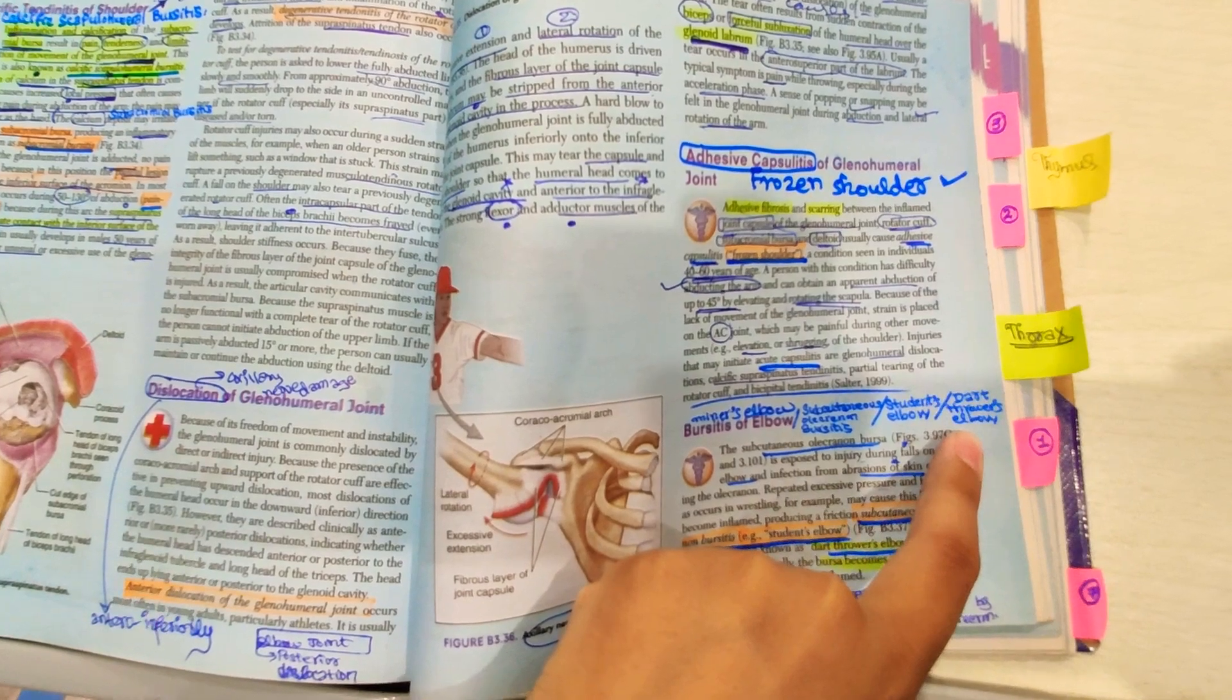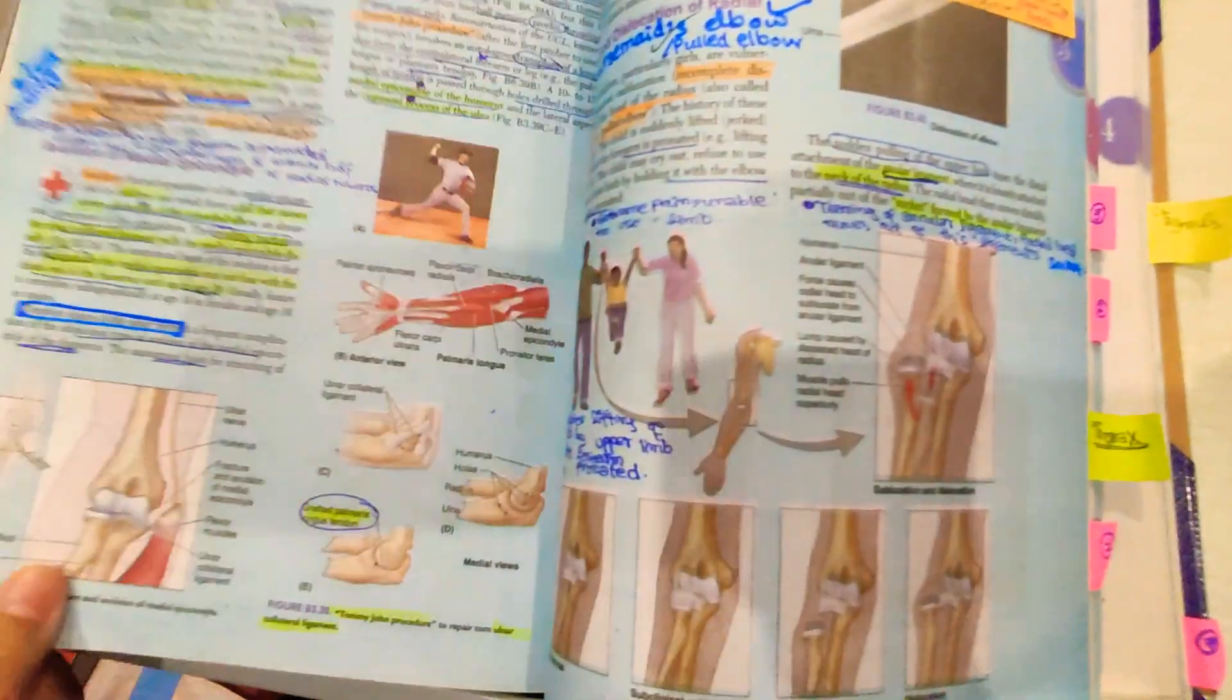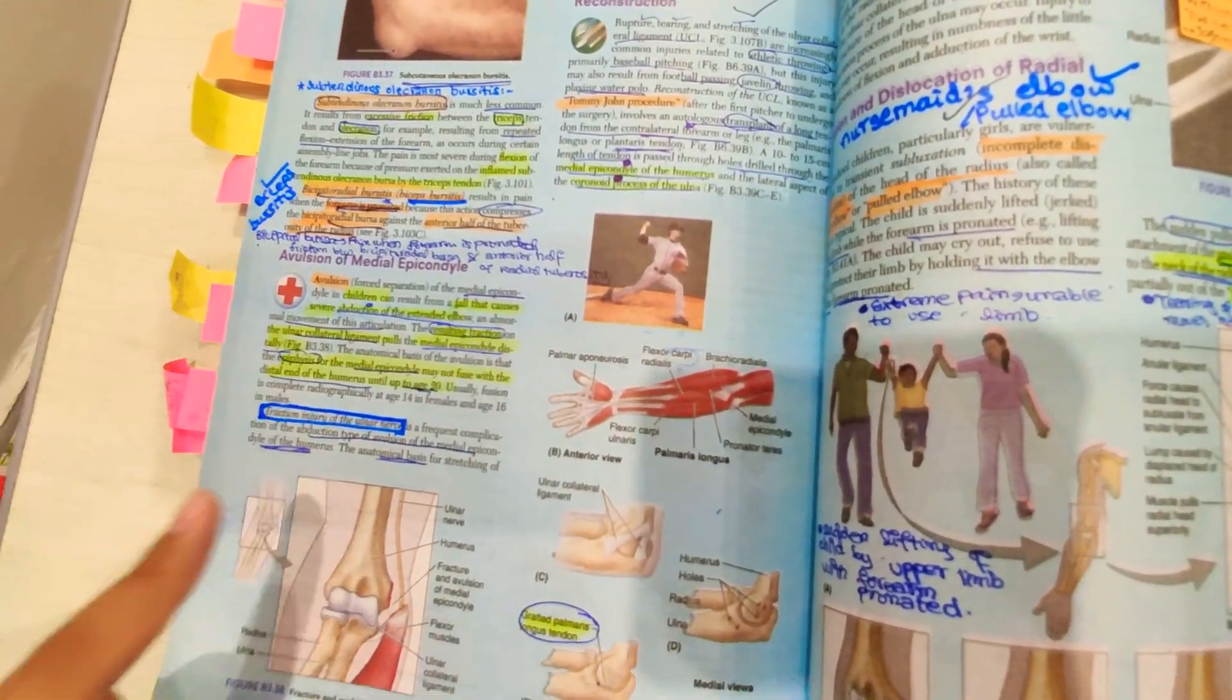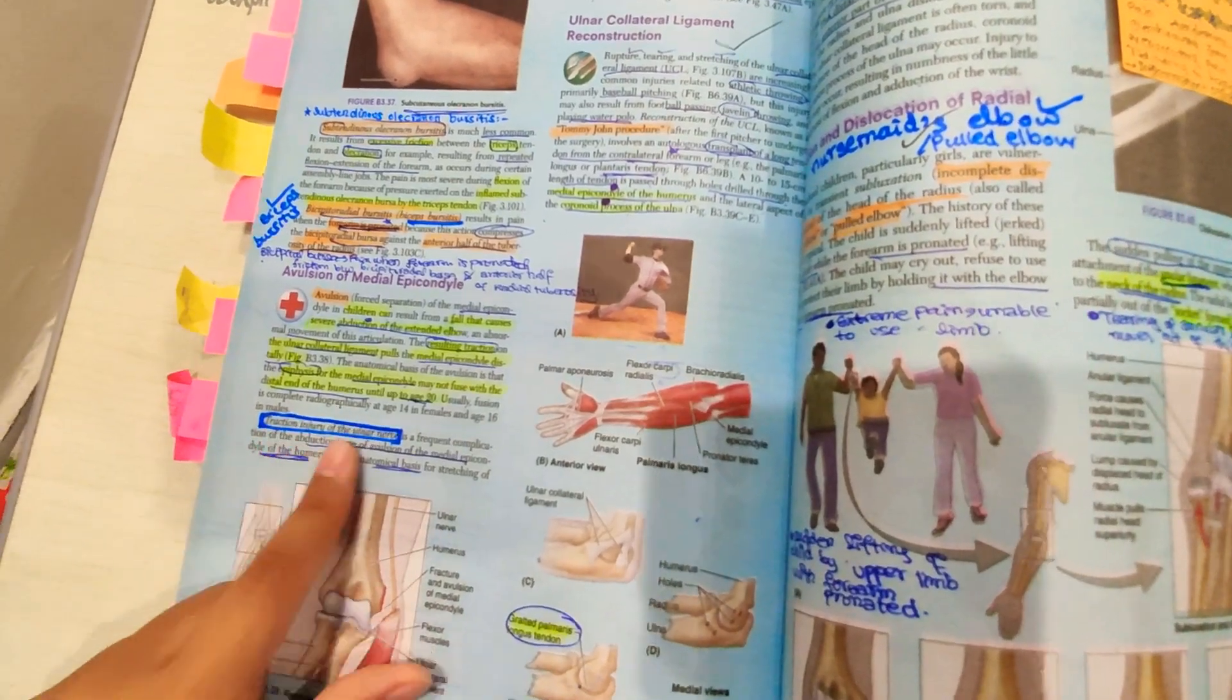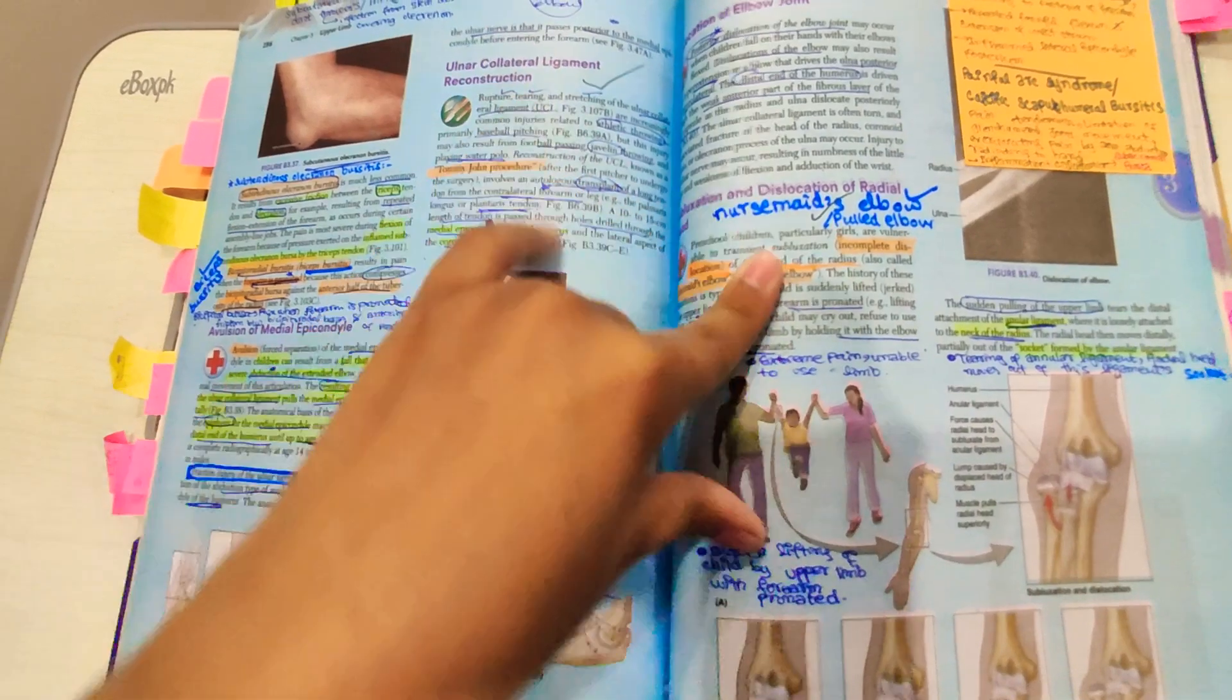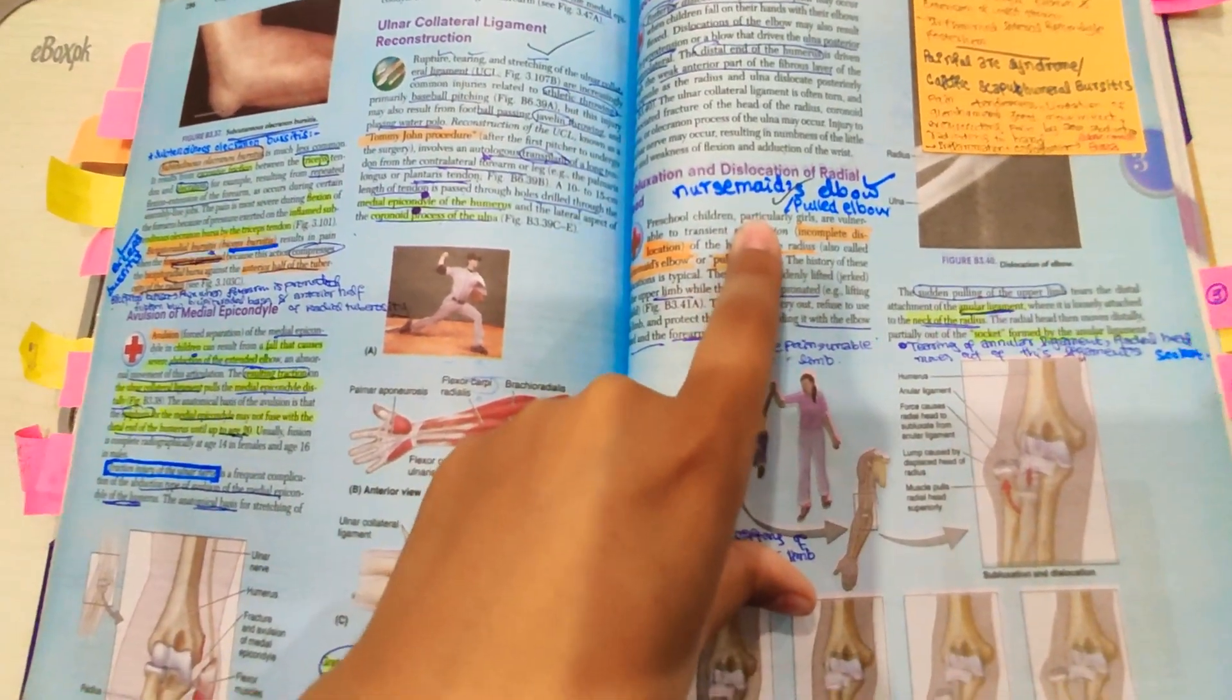Student's elbow, dart thrower's elbow, miner's elbow - it's other names, okay. And then you have to do biceps bursitis and you have to do traction injury of ulnar nerve, and then ulnar collateral ligament reconstruction, nursemaid's elbow, pulled elbow.